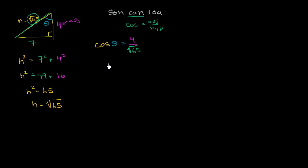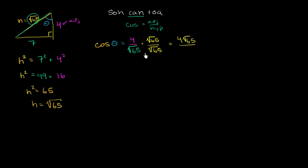Sometimes people want you to rationalize the denominator — they don't like an irrational number there, like the square root of 65. To do that, multiply the numerator and denominator by the square root of 65. This doesn't change the value since we're multiplying by 1. The numerator becomes 4 times the square root of 65, and the denominator becomes 65. We didn't eliminate the irrational number — it's just now in the numerator.